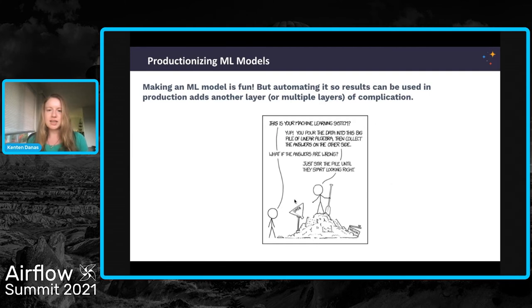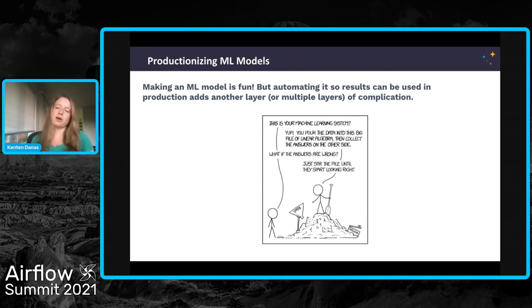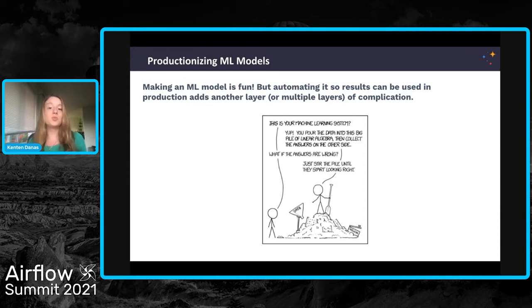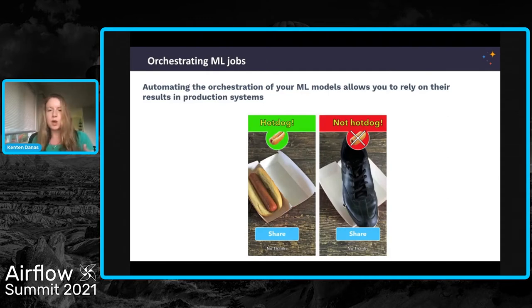The use case I'll focus on today is productionizing machine learning jobs. Making a machine learning model can be really fun — you can work in a Jupyter notebook, grab some data, play around with some Python packages, and get something working often without too much hassle. But taking that model and putting it into production adds multiple layers of complication: how do you orchestrate that model, train it on a schedule, publish results, keep track of versioning automatically, and what do you do if something goes wrong?